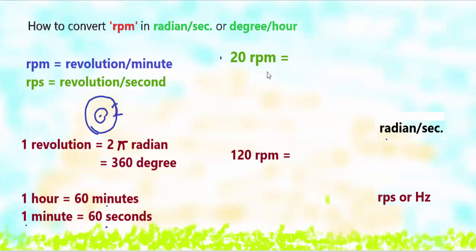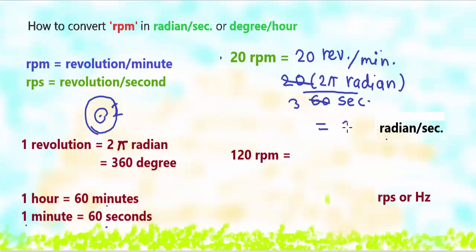Here we are going to convert 20 RPM into radian per second. 20 revolution per minute. We know one revolution equals 2π radian, so replace this revolution by 2π radian. And one minute equals 60 seconds, so replace this minute by 60 seconds. This will give us 2π/3 radian per second.